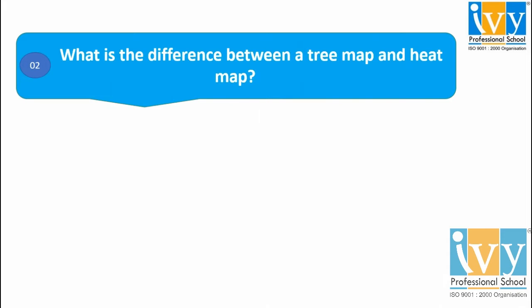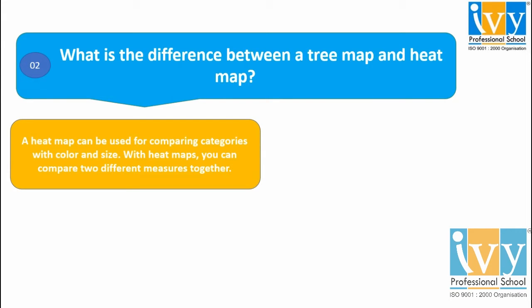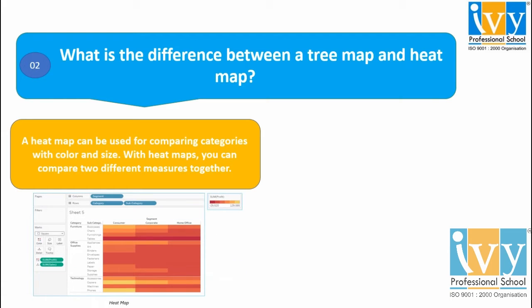Moving on to question number 2: What is the difference between a tree map and heat map? Basically, we use a heat map when we want to compare categories with color and size. With heat maps, we can compare two different measures together.